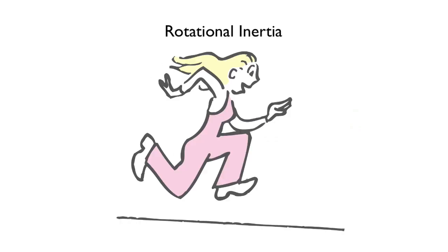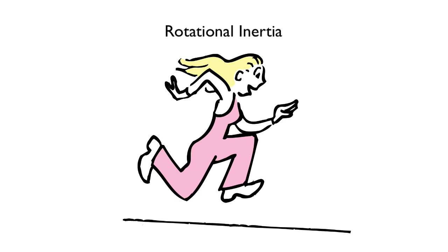Why do you suppose we can move our legs faster when we curl them up as we run? Answer: we're keeping our legs closer to our body, which means less rotational inertia.